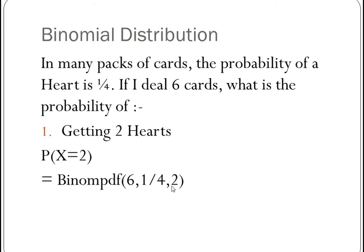So that's binomial PDF, probability distribution function, and it's 6, quarter, comma 2. And when I type that into my calculator, I get 0.2966 to four decimal places.